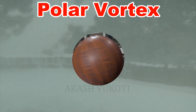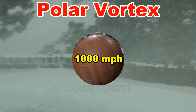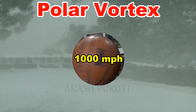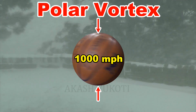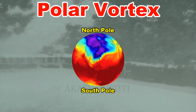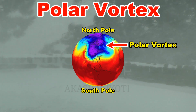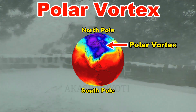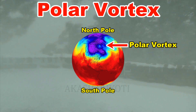Imagine a ball spinning at a speed of a thousand miles an hour. The air surrounding this ball also spins, and the air spins much more at the edges of the ball. In reality, this ball is Earth, the edges of the ball are the poles, and the air spinning at the poles is actually the polar vortex. The Earth rotates from west to east and so does the air, and the polar vortex also rotates from west to east at about 150 miles an hour.